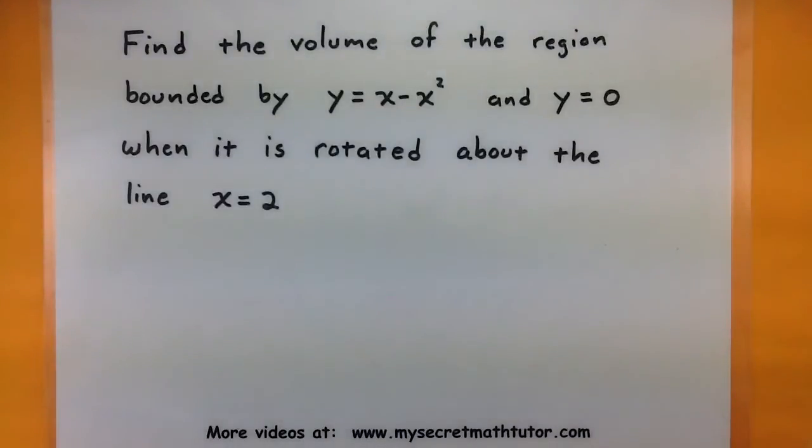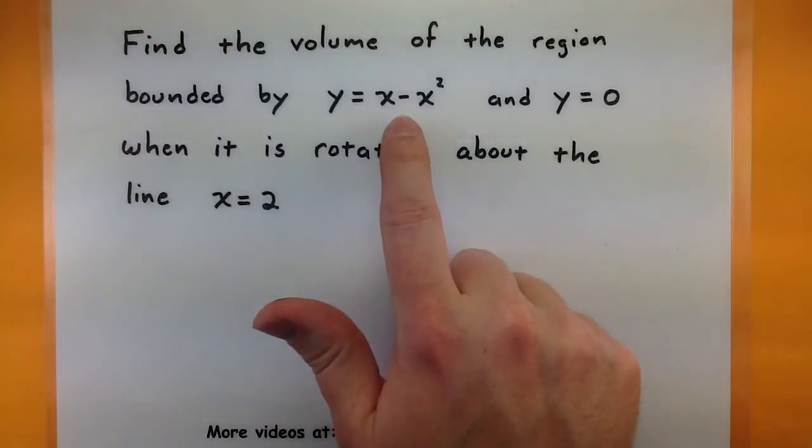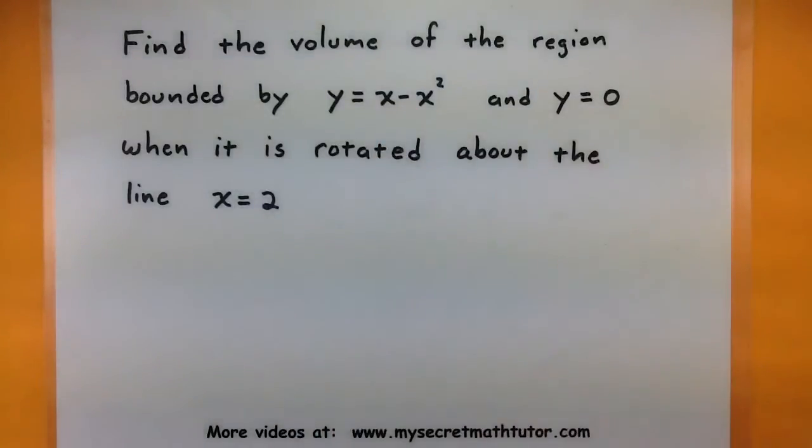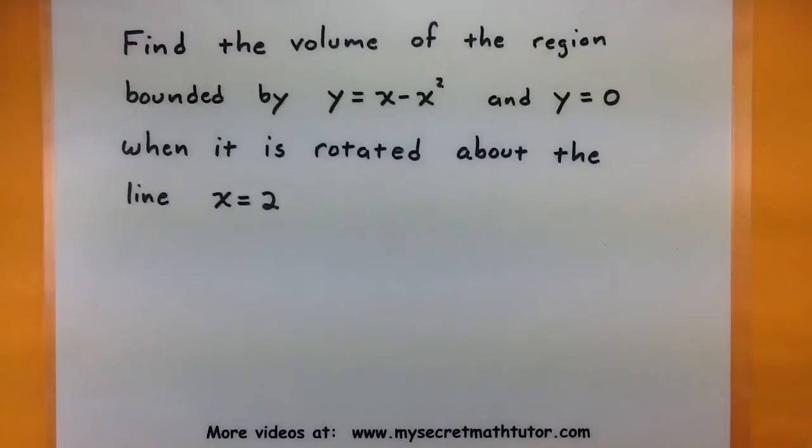In this one we want to find the volume of the region that's bounded by the following curves: y equals x minus x squared and y equals 0. What's special about this example is we will rotate it about the line x equals 2, so not one of our axes.